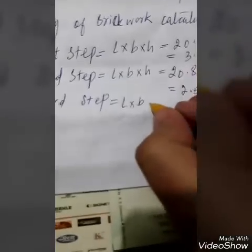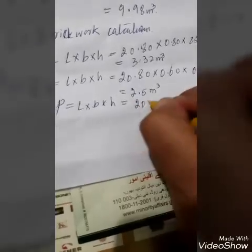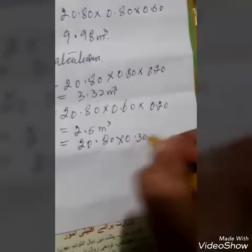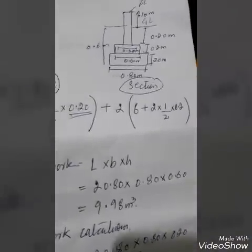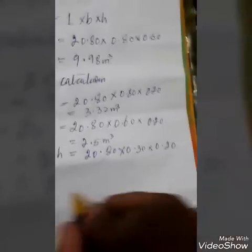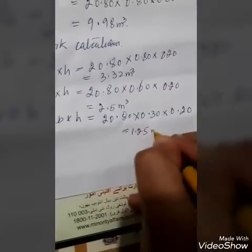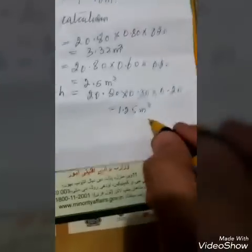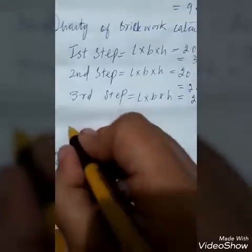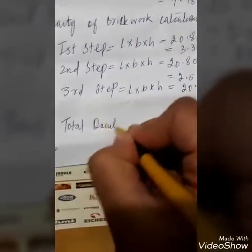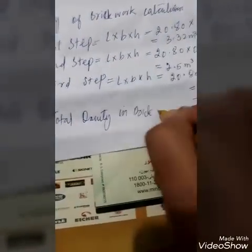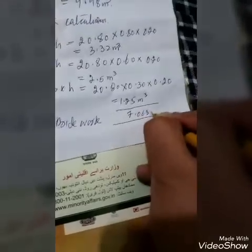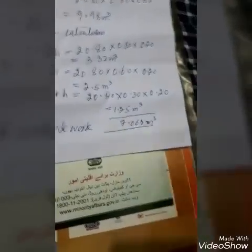For the third setup, it is also length into breadth into height. The total length is 20.80 meters, the breadth is 0.30 meters, and the height is 0.20 meters. The total for the third setup will be 1.25 cubic meters. If we add up all these footings, we get the total quantity of brick work, which is 7.068 cubic meters. That's all.